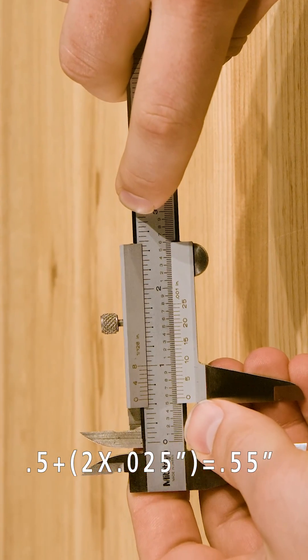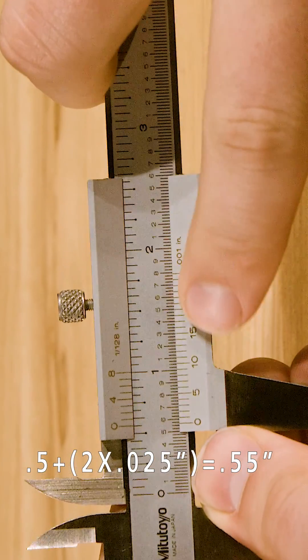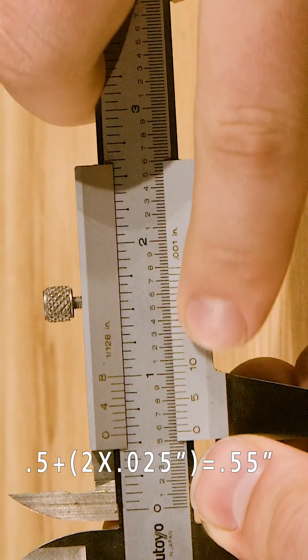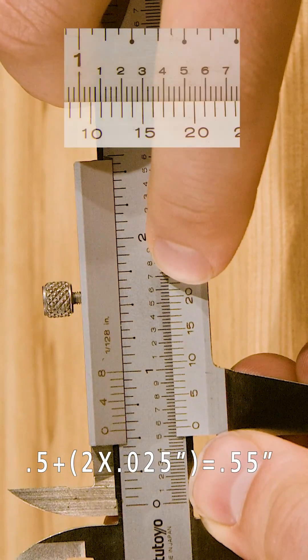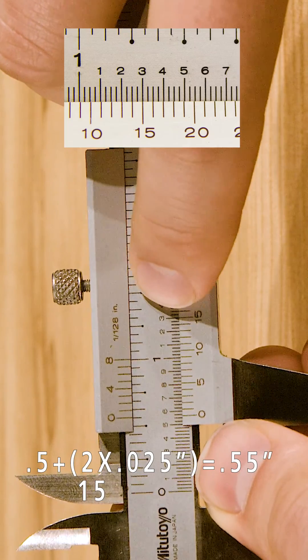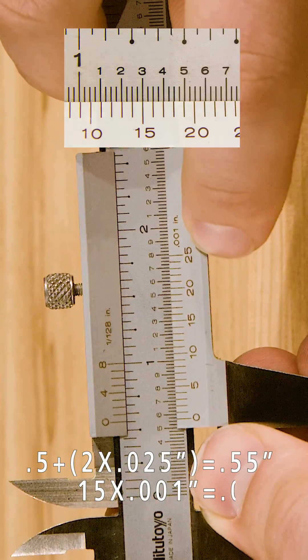To read the vernier scale, note how the lines on the scale match up with the lines on the main scale. The way that the scale is made, only one of these lines will match up correctly. In this case, the 15 matches up correctly, so that's .015 inches.